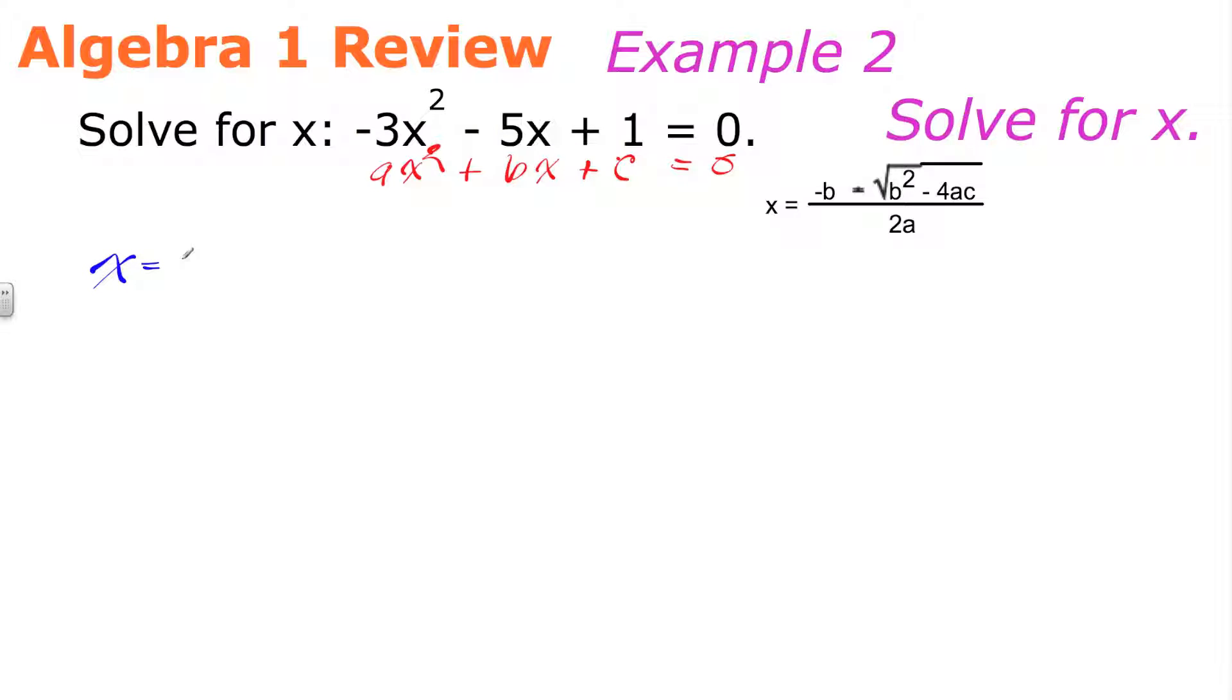We'll write it down as x is equal to, and put my fraction line, the opposite of b. In this case, b is a negative 5, so the opposite of a negative 5. You could have written that down as a positive 5. I'll simplify that here in a minute. Plus or minus the square root of, now notice how I do that square root. I'm going to try to put that top on until I write down what I need to underneath. In this case, b², which is, again, -5². It's going to be important, especially if you're using a calculator, to put that negative 5 in parentheses. Otherwise, most calculators will do that wrong.